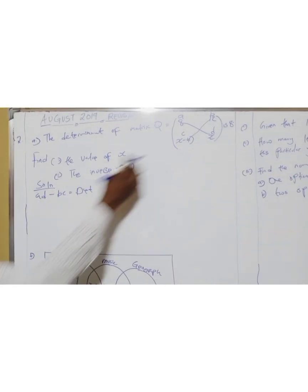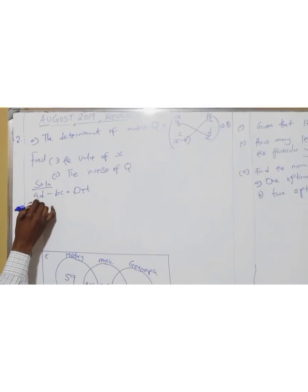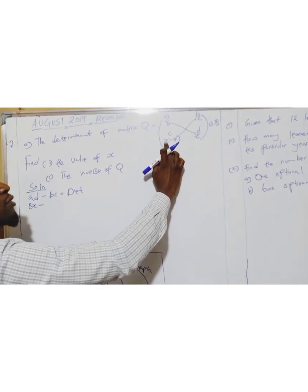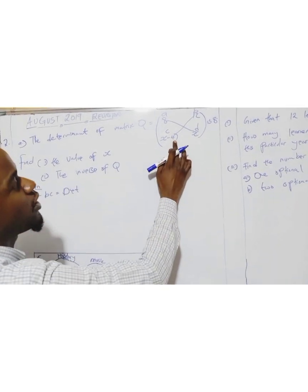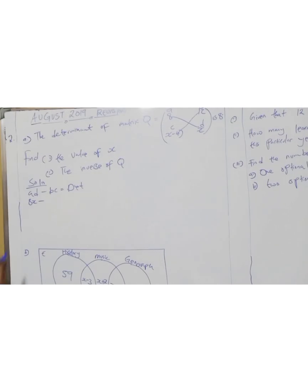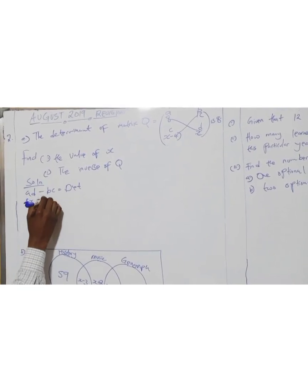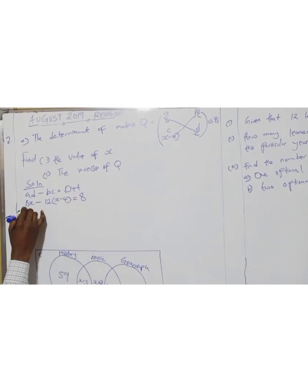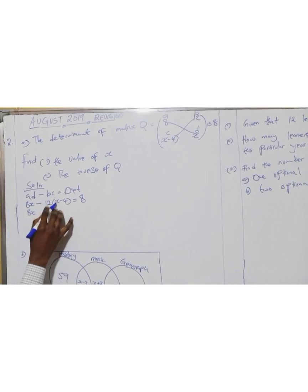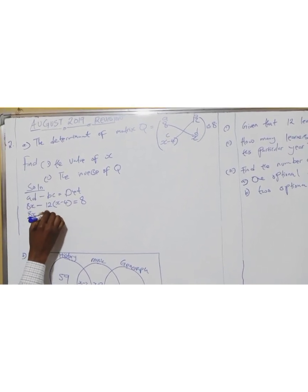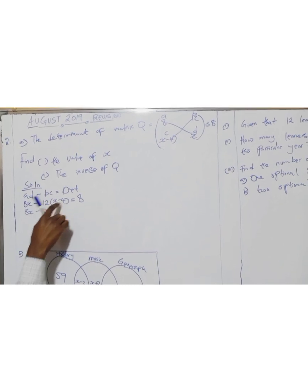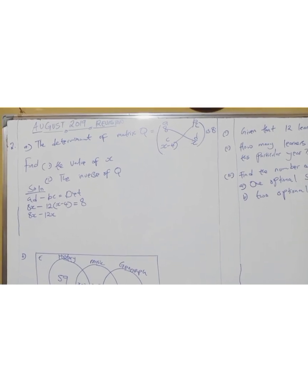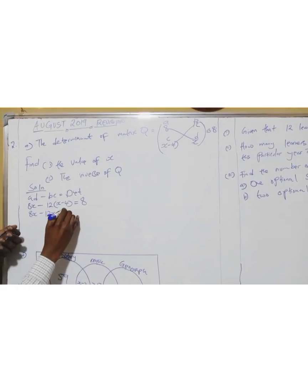So what is 8 times d? 8 times x. So 8x minus — you have this 12. This 12 is multiplying both x and 4, because they are two variables. So when there are two variables you have to multiply them. So you have 12 and then x minus 4. Our determinant is 8. So 8x equals negative 12x. Negative 12 times negative 4 gives us positive 48, because negative times negative.